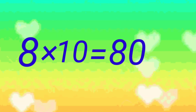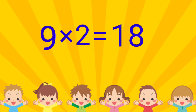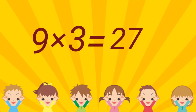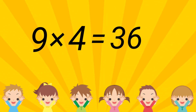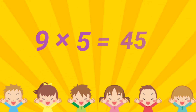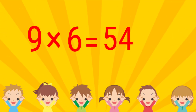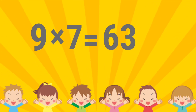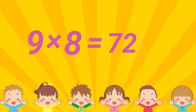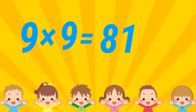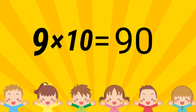8 tenths are 80. 9 on the 9. 9 twos are 18. 9 twos are 27. 9 twos are 36. 9 twos are 45. 9 twos are 54. 9 twos are 63. 9 twos are 72. 9 twos are 81. 9 twos are 90.